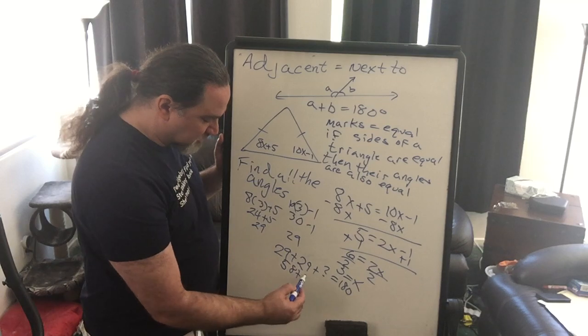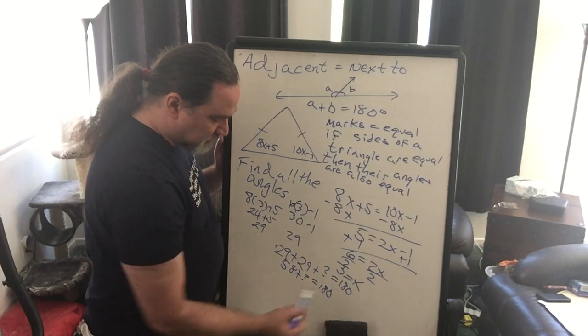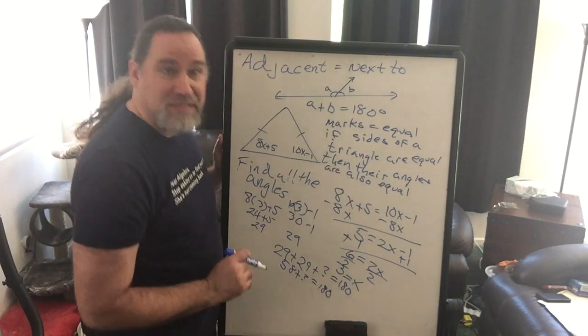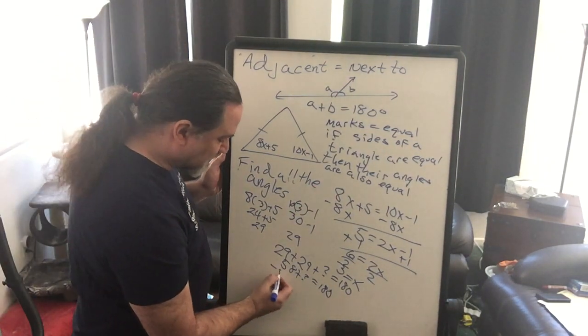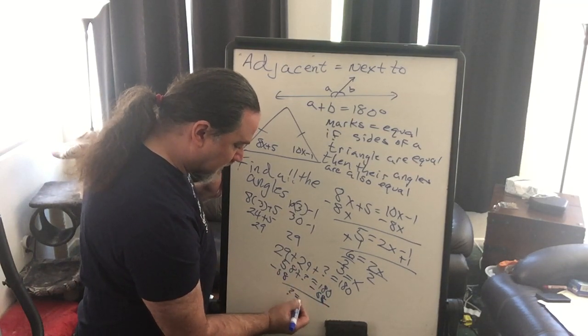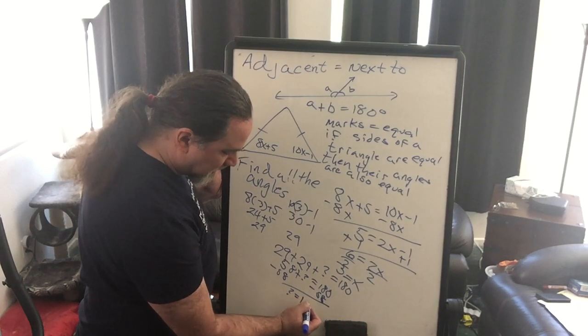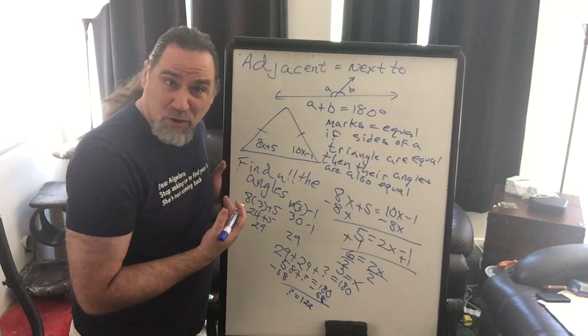So we're going to plug that all together. We get 58 plus our question mark is 180. I know it's kind of going at a slant there, but that's just the way it is because I'm tall and this is short. So we subtract that 58, and our unknown angle would be 122.